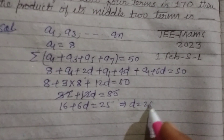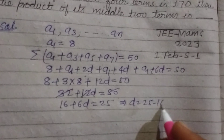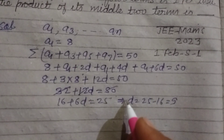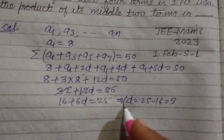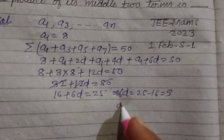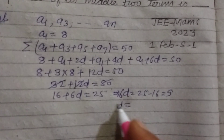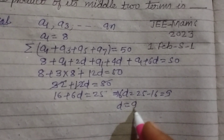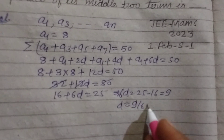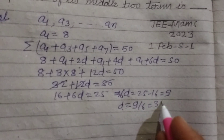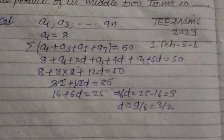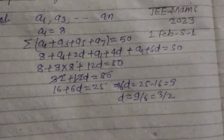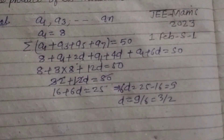So 25 minus 16 is 9, and here 6D equals 9, so D equals 9/6, which simplifies to 3/2. Therefore D is equal to 3/2.